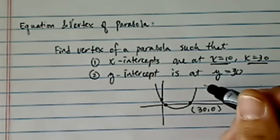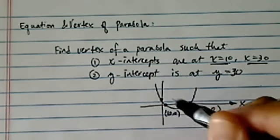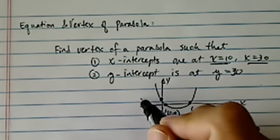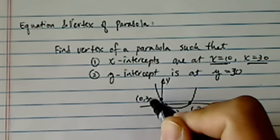It cuts into the x-axis. This is 10 and 0. The y-intercept is where the curve cuts into the y-axis and then we were given that point is 0 and 30.